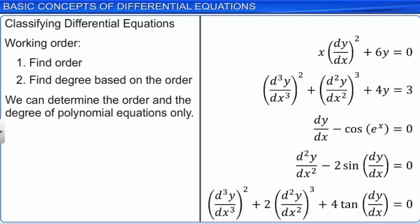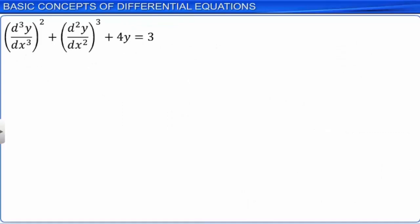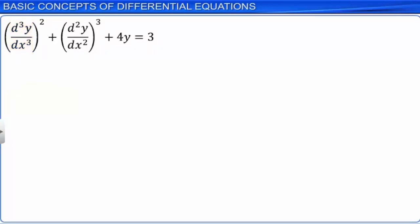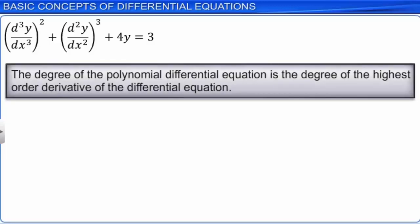Consider the second differential equation. The derivative with the highest order signifies the order of the differential equation. If we look at the order of the derivatives, the highest derivative is 3, so the order of the differential equation is 3. The order of the highest order derivative occurring in a differential equation is called the order of the differential equation. The degree of the polynomial differential equation is the degree of the highest order derivative. Here, for the highest order derivative of order 3, the degree is 2, so this is a third order, second degree equation.